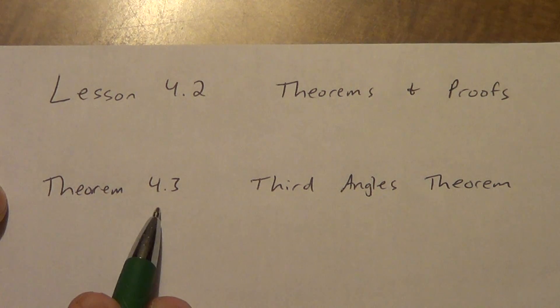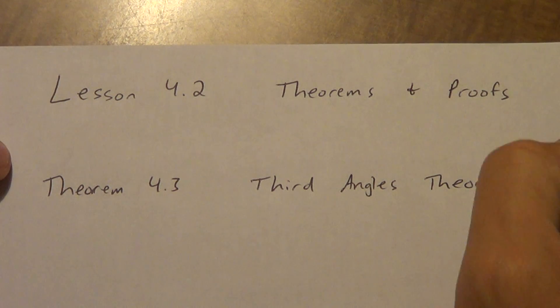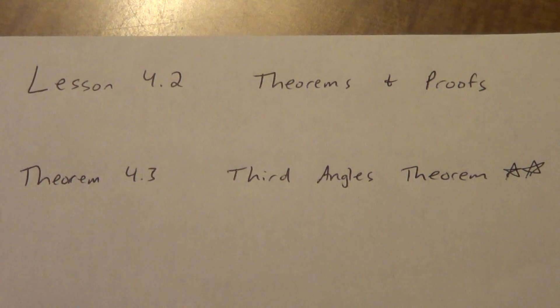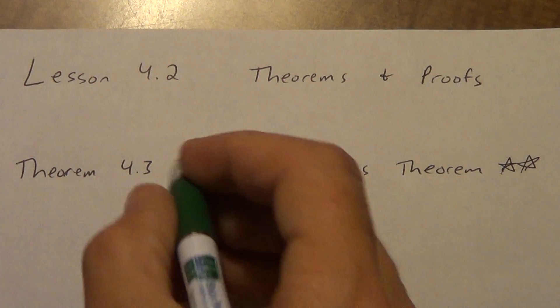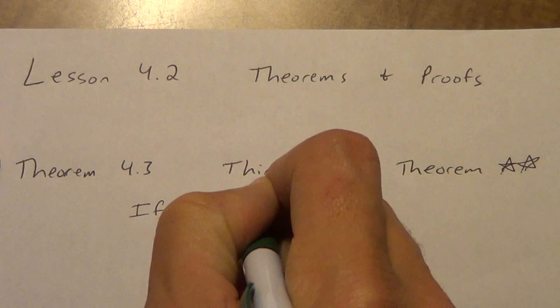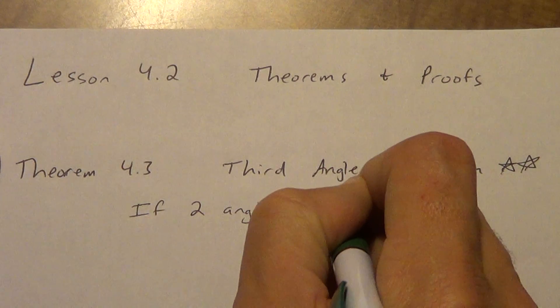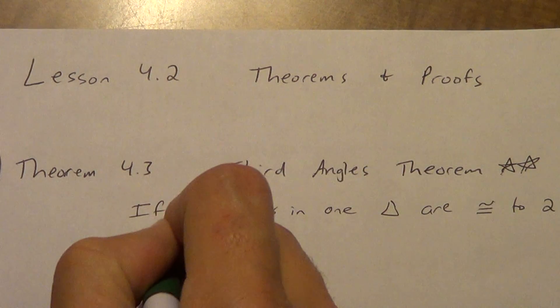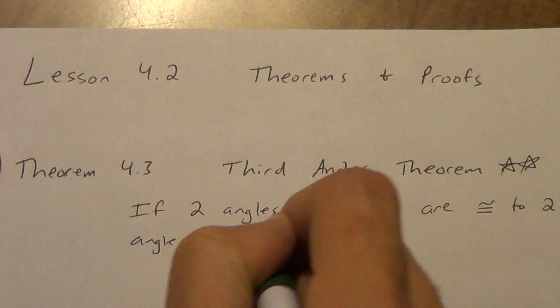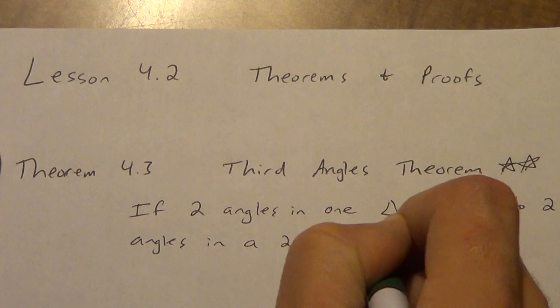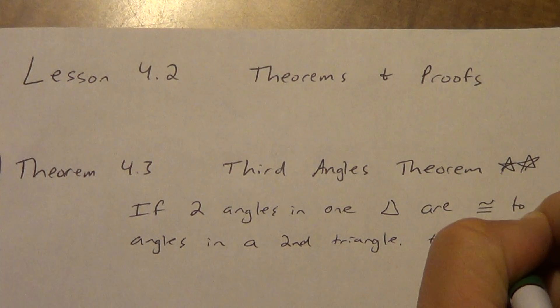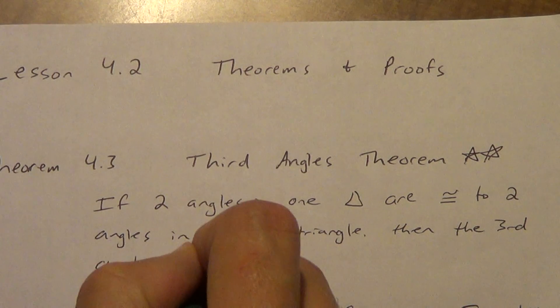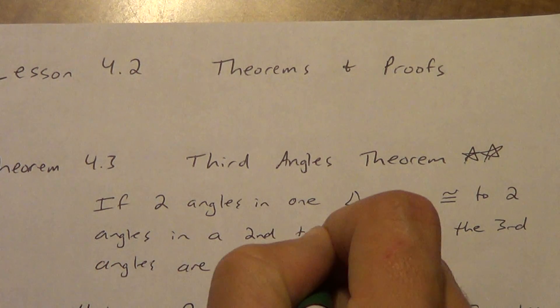First theorem is Theorem 4.3. It's called the Third Angles Theorem. We're going to give this one two stars. We don't use it a lot, but we use it often enough that it's going to be helpful. The Third Angles Theorem is not complicated. It says if two angles in one triangle are congruent to two angles in a second triangle, then the third angles are also congruent.